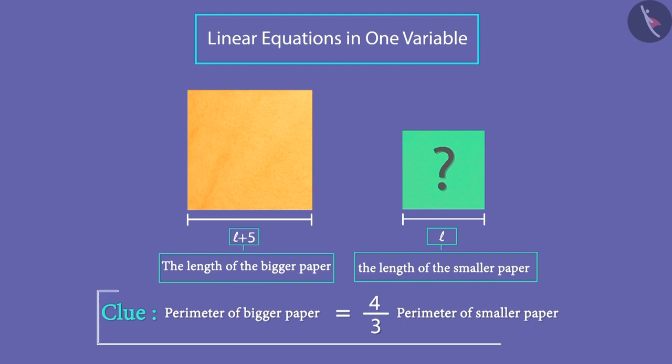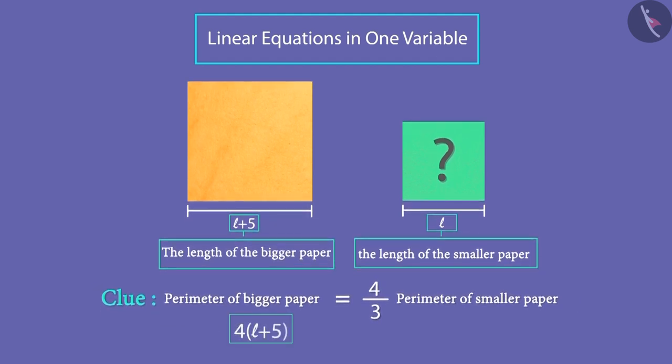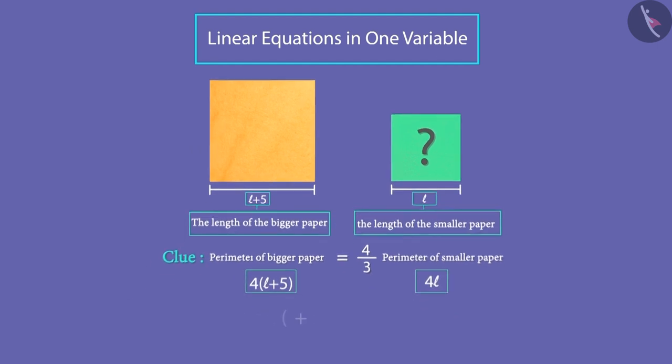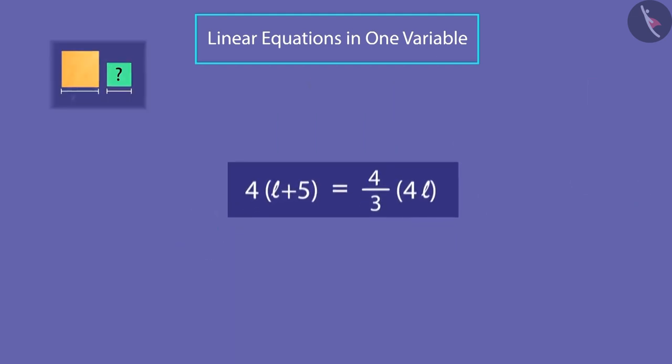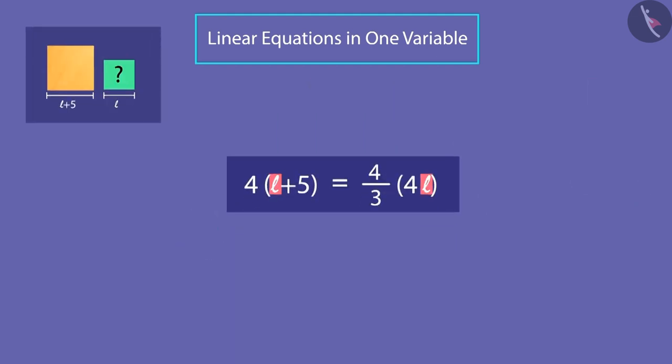Let's use the clue given to Rani. The perimeter of the bigger paper is 4 by 3 times the perimeter of the smaller paper. We can write it this way. Did you notice it? Here, the variable exists on both the sides of the equation.